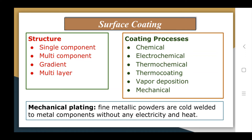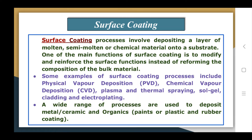The surface coating process involves depositing a layer of molten, semi-molten, or chemical material onto the substrate. One of the main functions of surface coating is to modify and reinforce the surface, rather than reforming the composition of the bulk material. Examples of surface coating processes include Physical Vapor Deposition (PVD), Chemical Vapor Deposition (CVD), thermal spraying, plasma spraying, cladding, and electroplating. A wide range of processes are used to deposit metals, ceramics, or organic materials such as paints, plastics, and rubber coatings.